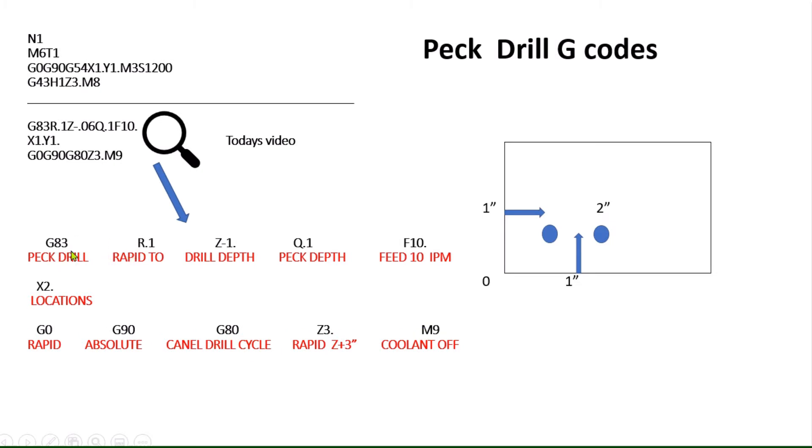Here's how similar it is. You had G81 before, now you have G83. G83 means peck drill. Your R value is the same, rapid to 0.1. This will be extremely easy if you memorize the last one.